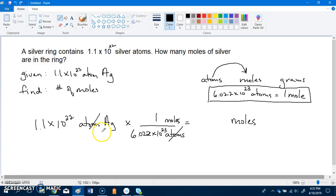And now what we're going to do is multiply 1.1 times 10 to the power of 22 times 1. That's going to give us 1.1 times 10 to the 22 moles divided by 6.022 times 10 to the 23.